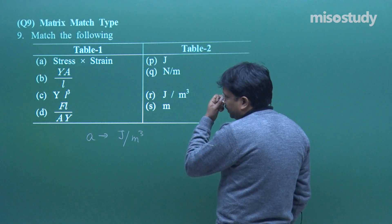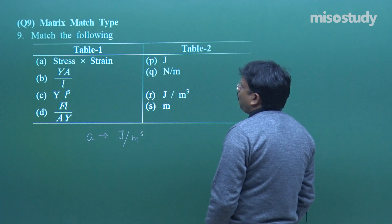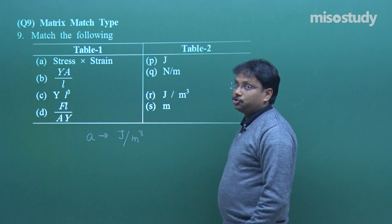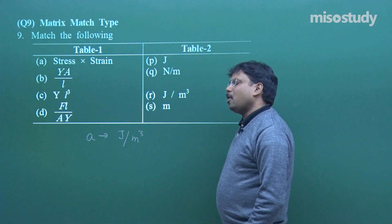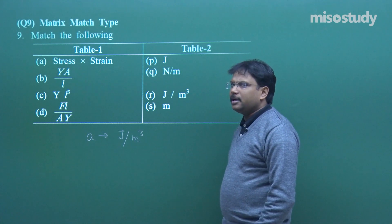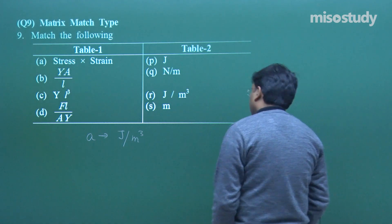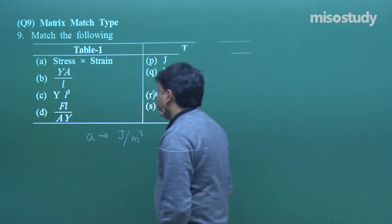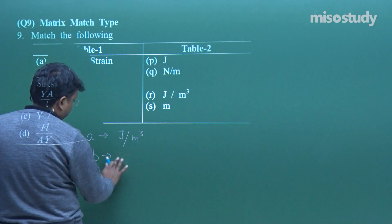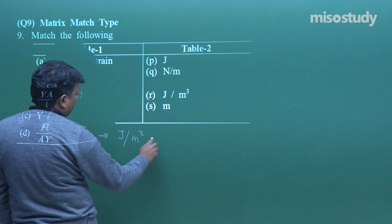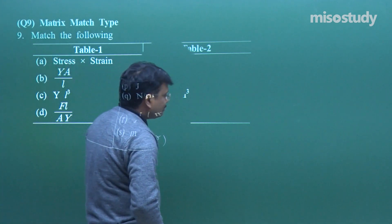Then comes B. What is in B? YA by L. Y equals F upon A upon delta L upon L, so somewhere force is being considered. From that point of view I would say B should come in terms of Q - that is force. So A maps to R, and B maps to Q.